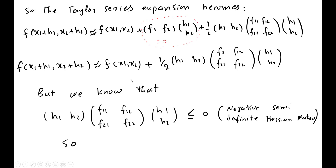This remaining term is the Hessian matrix of second order derivatives. For proper output maximization, the Hessian matrix must be non-positive — that is, it must be a negative semi-definite matrix. This concept was discussed in previous chapters: the matrix of second order derivatives must either be strictly negative or non-positive for proper maximization.